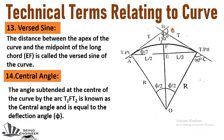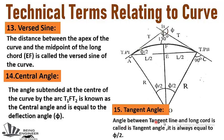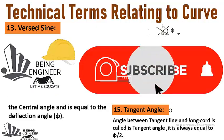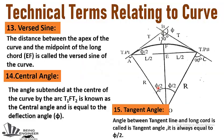The last term is tangent angle. The angle between the tangent line and the long chord is called the tangent angle, and it is always equal to phi divided by 2, or half of the deflection or central angle. As you can see, this is the tangent angle formed between the tangent line and the long chord, always equal to half of the deflection or central angle. That's all for today — please subscribe the channel and press the bell icon to get video updates.